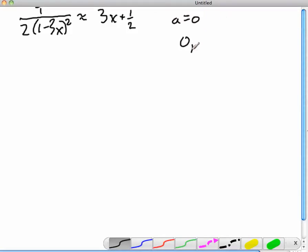If you plug in 0, that's the point (0, 1/2). 0 taken away from 1 is 1, 1 squared is 1, 1 times 2 is 2, 1 over 2 is 1 half, so the point is (0, 1/2).